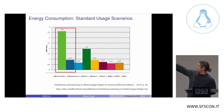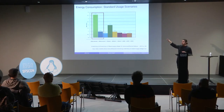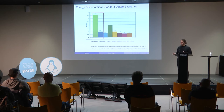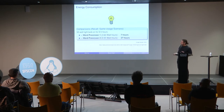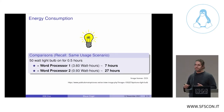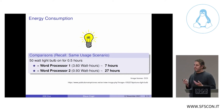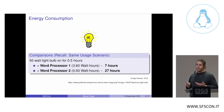You can talk about sustainability here as the relative sustainability between the two word processors — word processor two requires less resources and is therefore more sustainable. To compare this to light bulbs you might know: running a 50-watt light bulb for half an hour is equivalent to running word processor one for only seven hours, but gives you 27 hours of use time with word processor two for the exact same tasks. This illustrates the interdependency between software engineering and environmental issues — here, resource consumption.